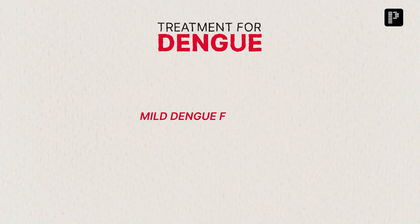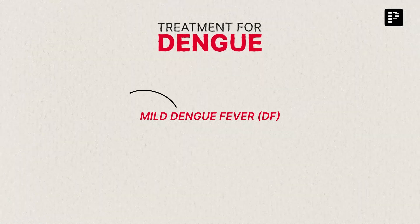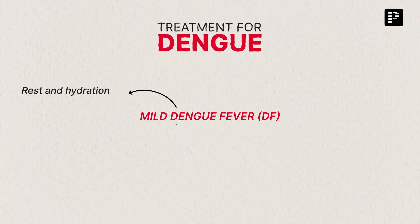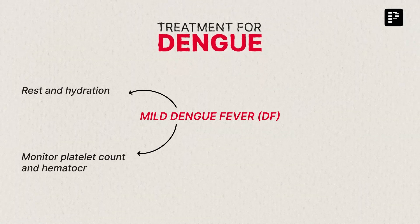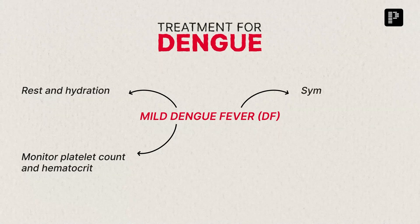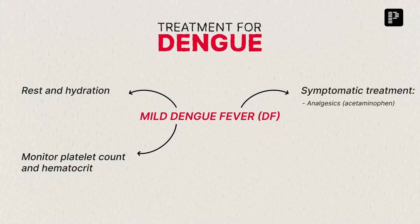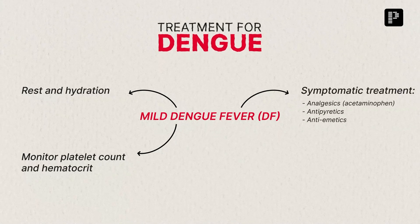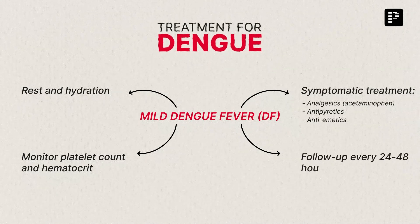For mild Dengue Fever, encourage rest and hydration, and monitor the patient's platelet count and hematocrit. Use symptomatic treatment including analgesics and anti-emetics to control nausea. Follow up every 24 to 48 hours to monitor progression.